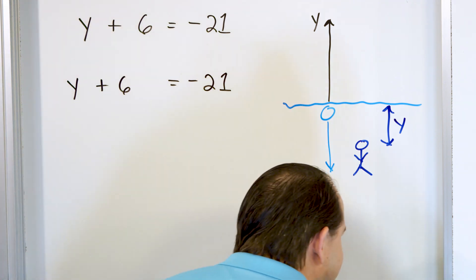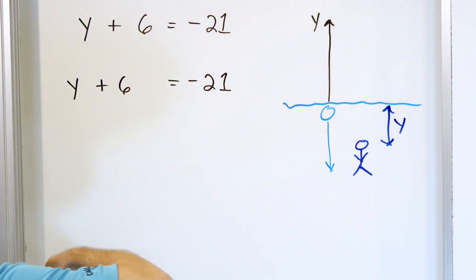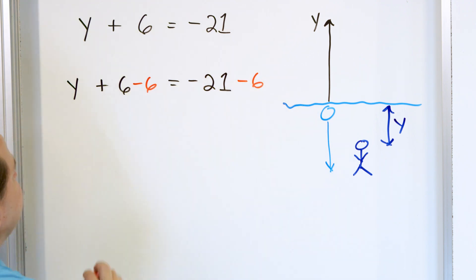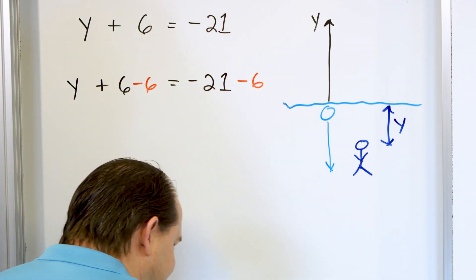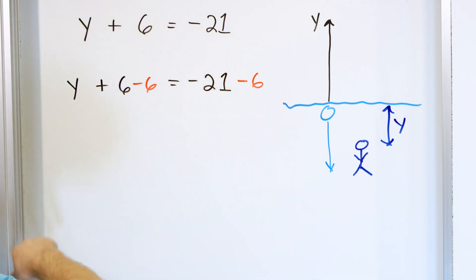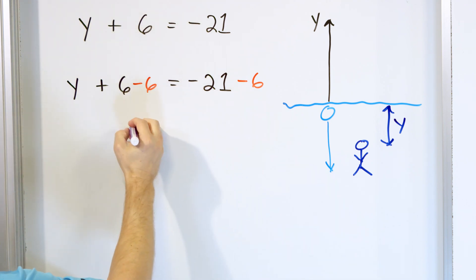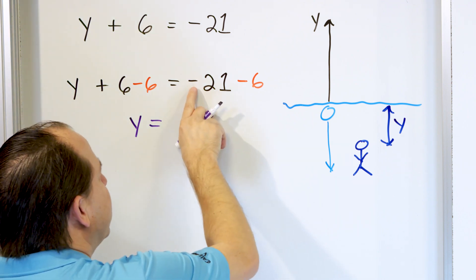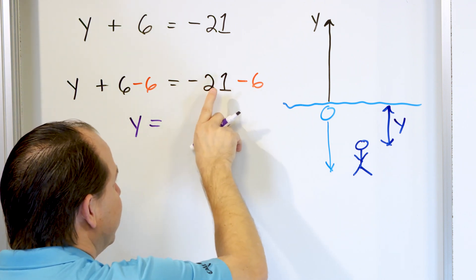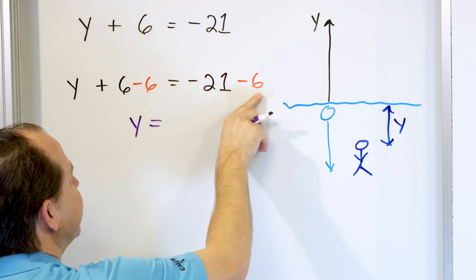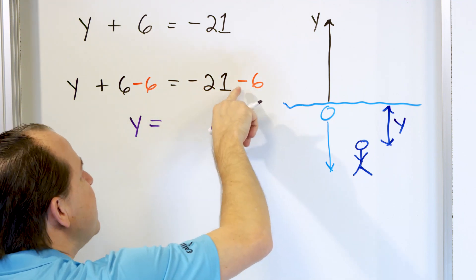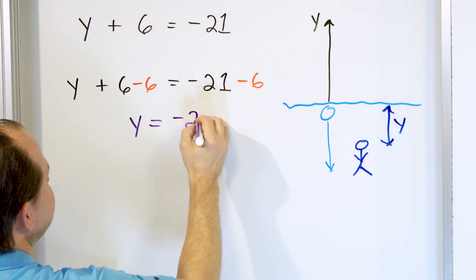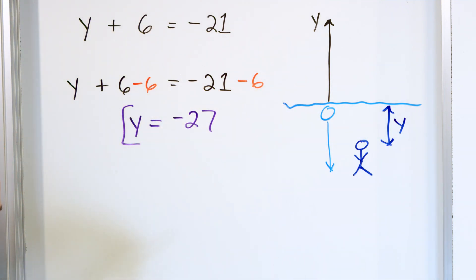But y is not by itself — we are adding 6 to it. So in order to get rid of it, we do the opposite: subtract 6, and we must do it to the other side too. On the left-hand side, 6 minus 6 gives you 0, so the only thing left is y. And what is negative 21 minus 6? You're negative and then you're subtracting more, meaning you go deeper negative, and that's negative 27. So the answer is negative 27.